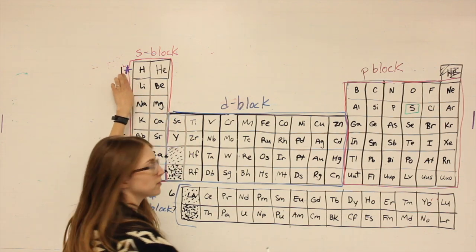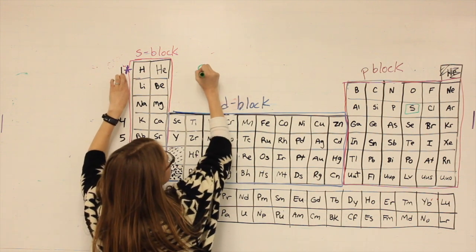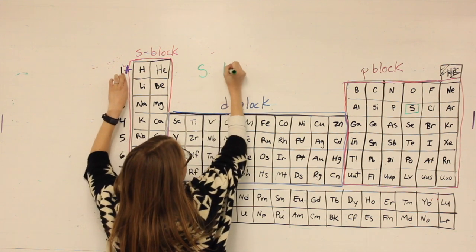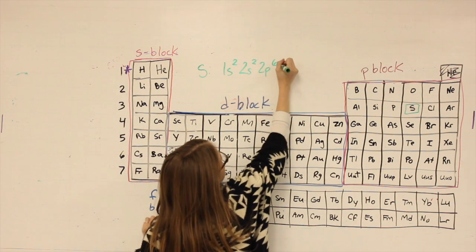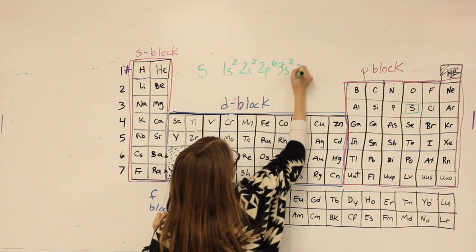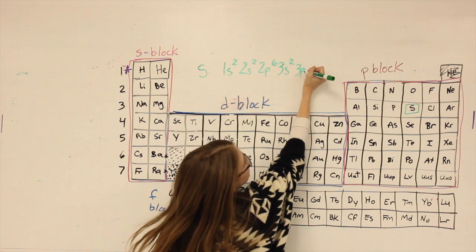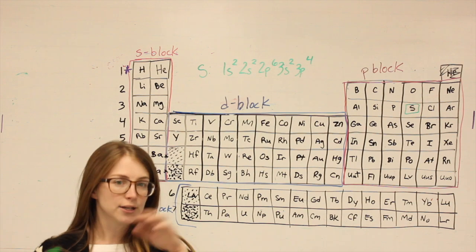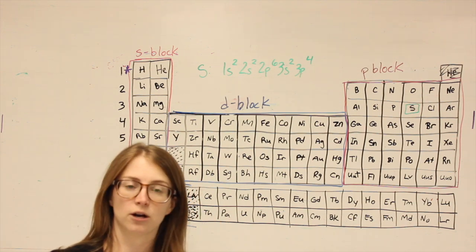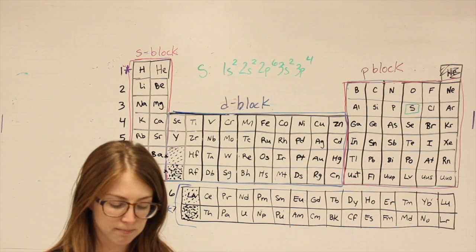Now sulfur's electron configuration would be 1s2, 2s2, 2p6, 3s2, 3p4. I didn't memorize that. I used my Candyland method to help get there. So let me show you where that answer comes from.